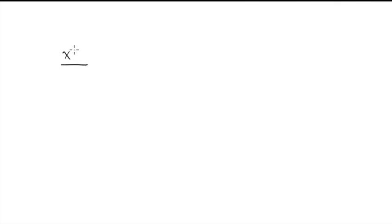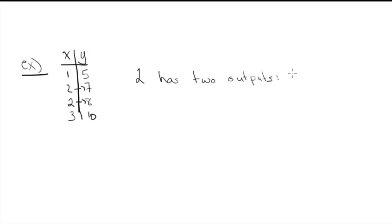You could also do this with a table of values. Let's do a different one. So let's take some numbers here: 1, 2, 3, 5, 7, 8, 10. So why is this one not a function? Well, again, it's the same number. 2 goes to 7, and 2 also goes to 8. So 2 has 2 outputs. One output is 7, and the other one is 8, therefore not a function.